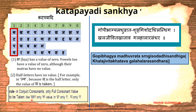Now let's apply this to the shloka: Gopi, Bhaagya, Madhu, Vrata. For 'Go', as discussed, we don't take the 'O' vowel — only 'Ga' is considered. 'Ga' means 3, so we write 3. For 'Pi', the 'E' matra is not considered — the full letter 'Pha' is taken. Looking at the table, Pha is assigned the number 1, so we write 1.